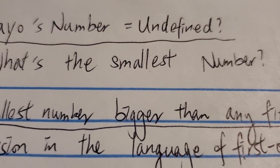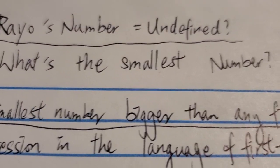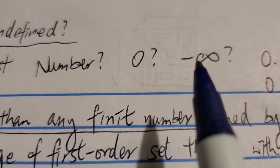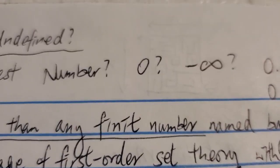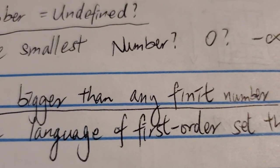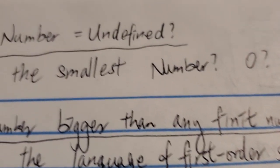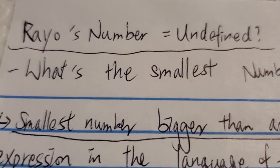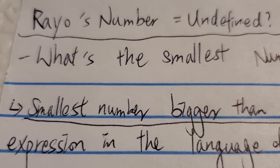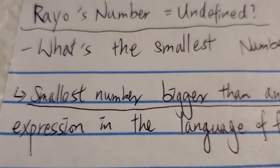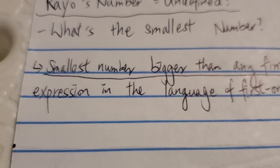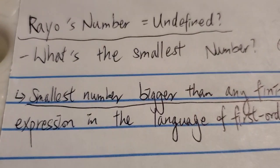So there's no smallest number either, if you're not counting zero. What's the smallest number after zero? It's actually undefined, because you cannot list that number. And this is exactly what reveals the problem with Rayo's number.